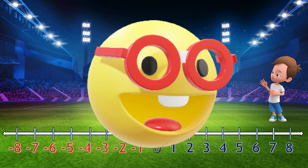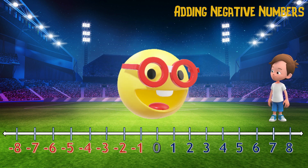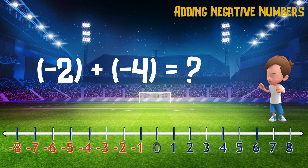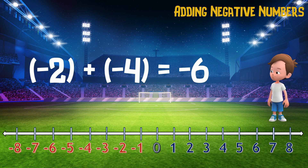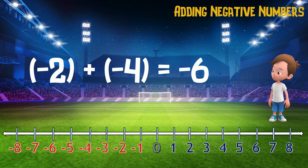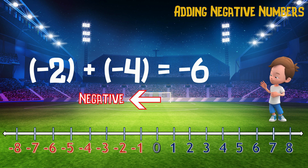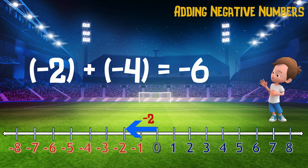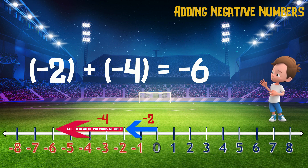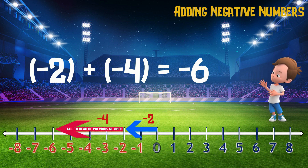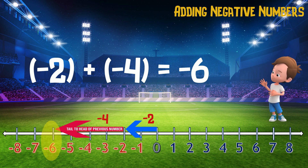Simple, right? Now let's add negative numbers. Let's work on negative 2 plus negative 4. The answer is negative 6. To show using the number line, let's place the corresponding arrows for each negative number. Remember, the arrow direction is to the left for negative numbers. Negative 2's arrow tail is at 0 with its head at negative 2. Negative 4's arrow tail starts at negative 2, where the previous number's head is — tail to head. We see that the head of the second arrow ended at negative 6, which is the answer to negative 2 plus negative 4.